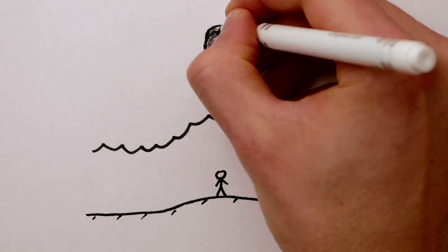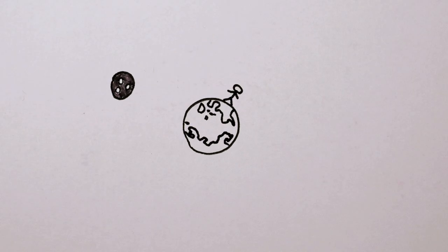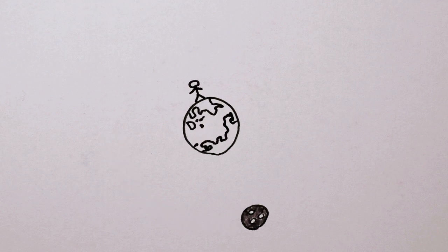And tidal forces from the Earth cause the Moon to bulge, too. All this bulging and sloshing dissipates some of the Earth's rotational energy, causing it to gradually slow down.